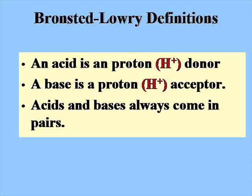The definition of acids and bases was expanded with the Bronsted-Lowry definitions. This defined an acid as a proton or H+ donor, and a base as a proton or H+ acceptor. The acids and bases always come in pairs. The reason H+ is called a proton is because if you remove the single electron from the hydrogen atom, most isotopes of hydrogen have no neutrons, so all that remains is a proton.